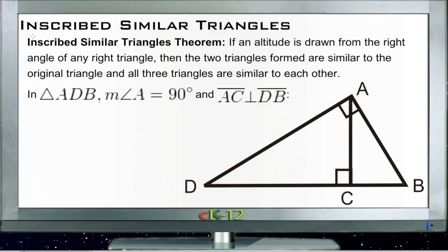I think this lesson is pretty cool actually. The Inscribed Similar Triangles Theorem talks about how you can take a right triangle and if you draw an altitude for the triangle, in other words if you draw a line through the right angle of a right triangle.